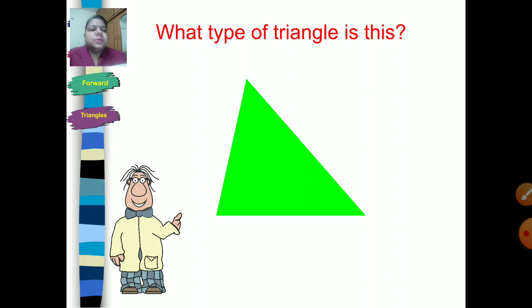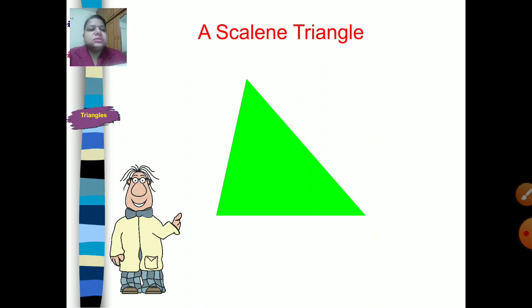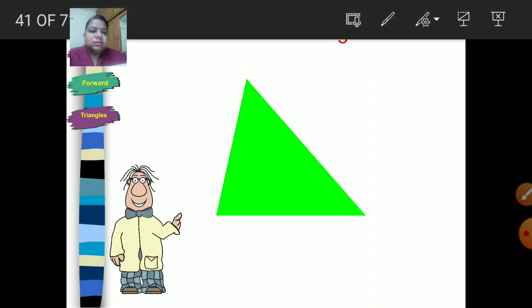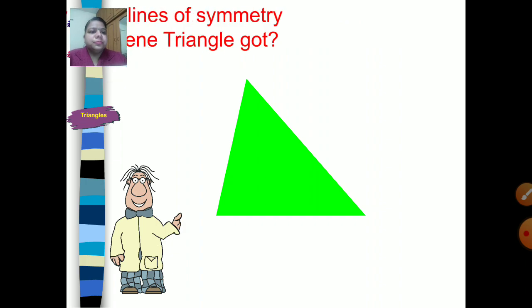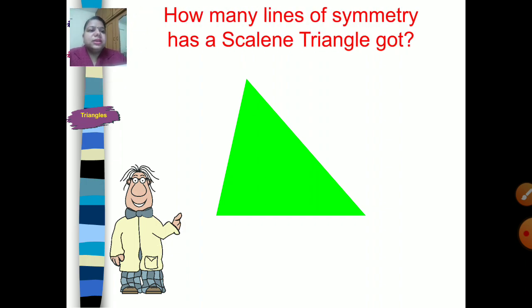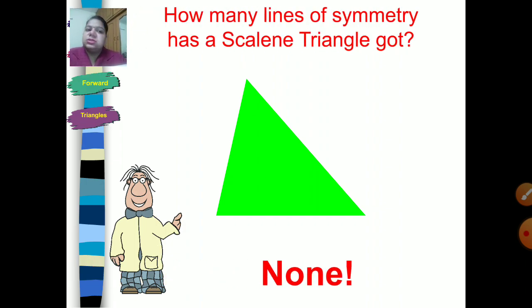This is a scalene triangle. It does not have any line of symmetry because all sides are different and all angles are also different.